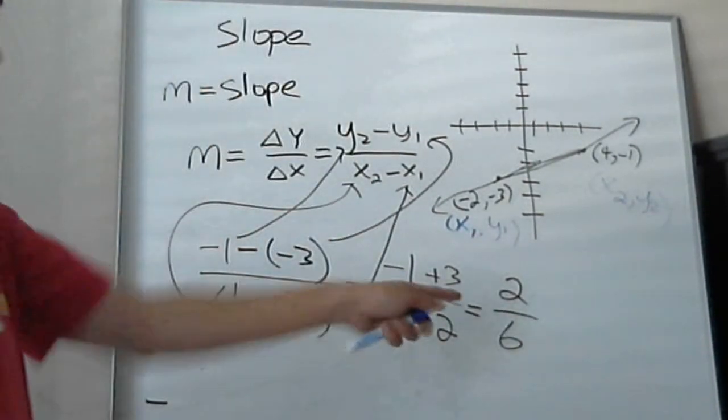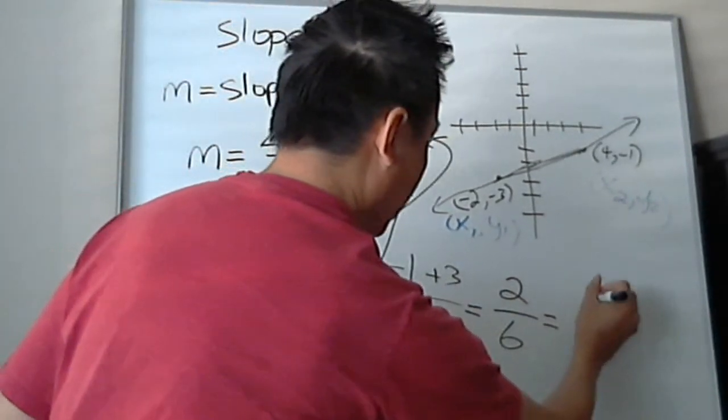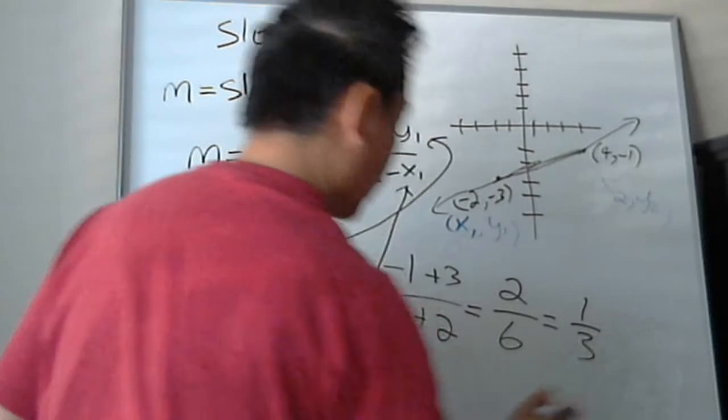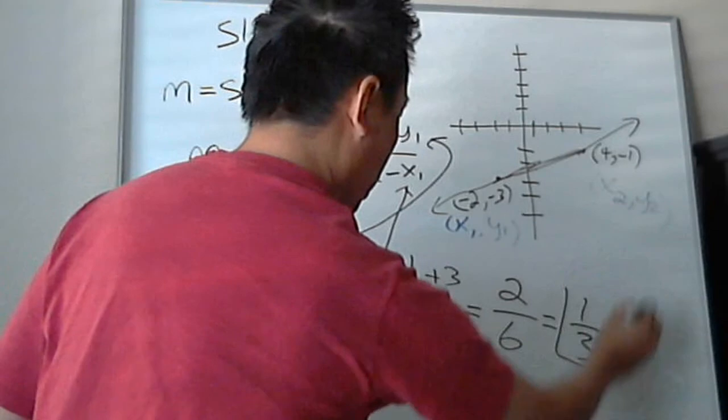So my slope is 2/6, but of course I have to reduce that. I can't leave it unsimplified. You divide by 2 on top, reducing. So the slope will be 1/3.